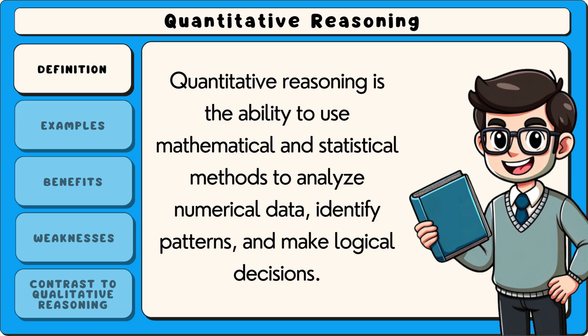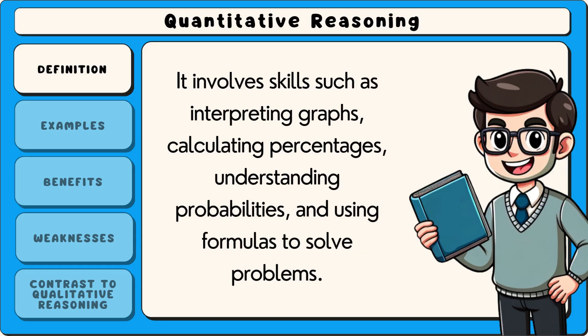Quantitative reasoning is the ability to use mathematical and statistical methods to analyse numerical data, identify patterns and make logical decisions. It involves skills such as interpreting graphs, calculating percentages, understanding probabilities and using formulas to solve problems.